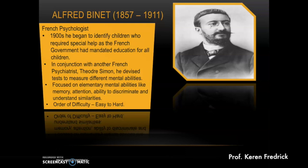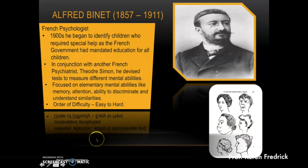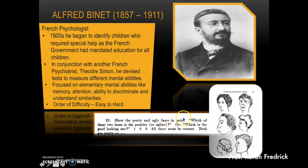Binet did not focus on reading or mathematical ability. An example of one of his test items involves looking at a picture and identifying which of the two faces is the prettier or better-looking one. In each pair, the subject picks the good-looking one. Thus, Binet focused on elementary mental abilities like memory, attention, ability to discriminate, and understand similarities — a range of cognitive abilities — with difficulty progressing from simpler to harder tests.